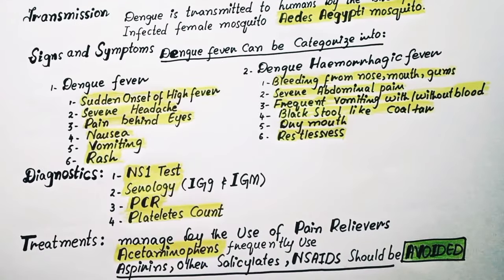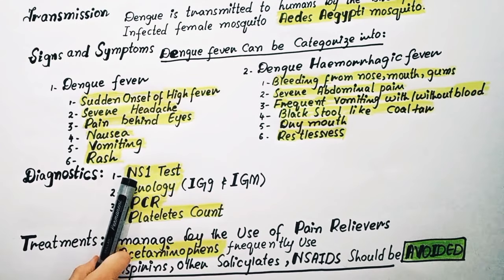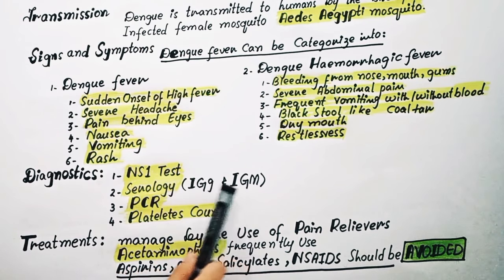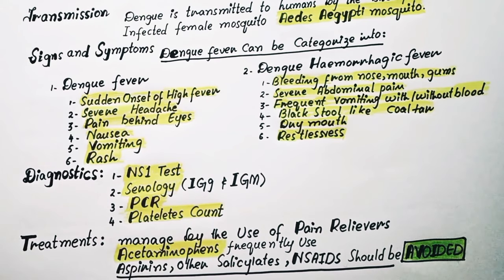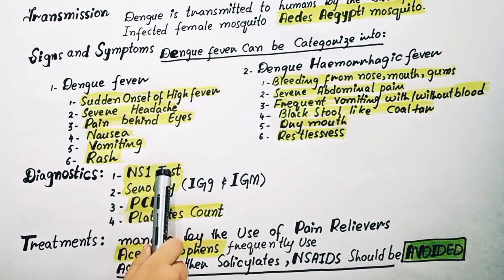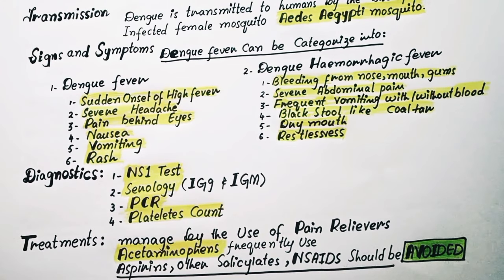Dengue fever can be diagnosed by blood tests including the NS1 test, serology tests (IgG or IgM), PCR, and platelet count. If the fever has been present for only one to two days, the NS1 antigen test is used, as it allows rapid detection from the first day of fever.